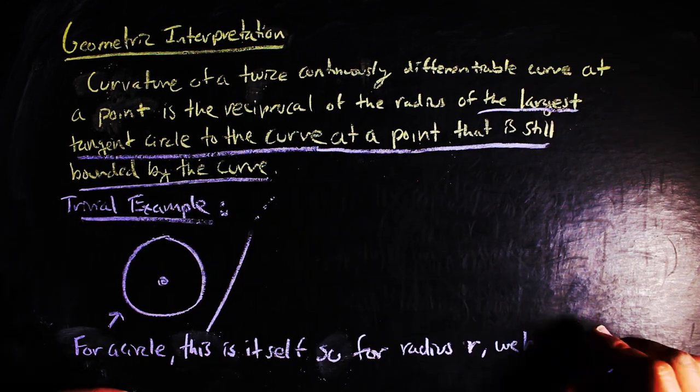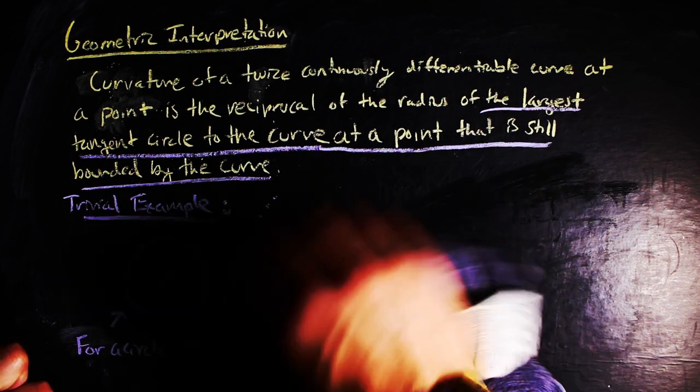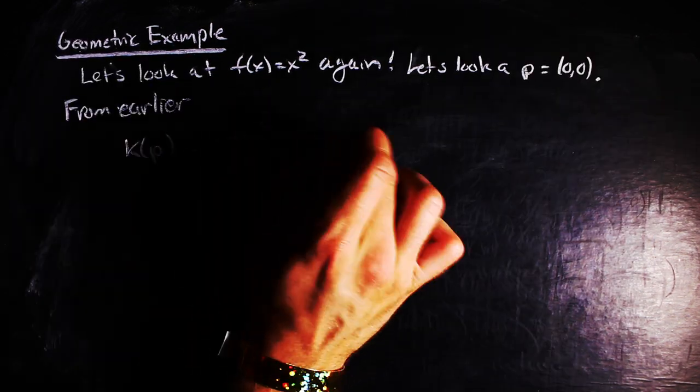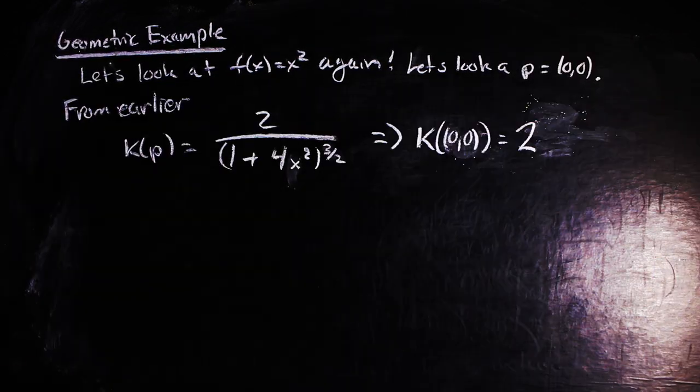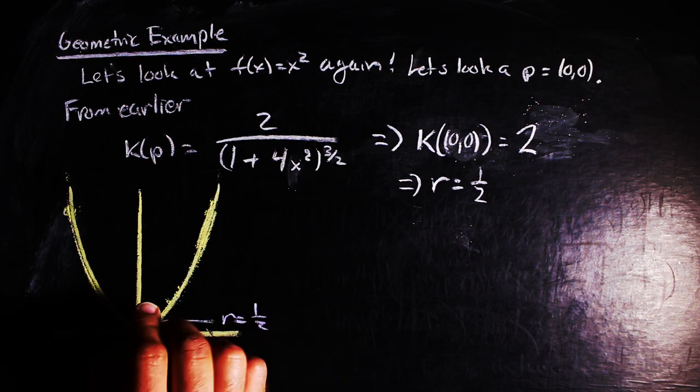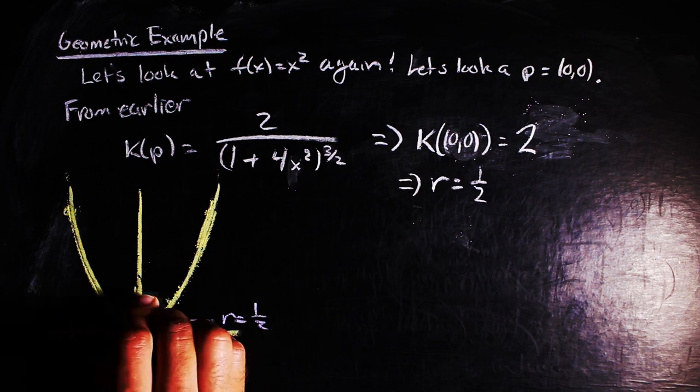For our parabola example, if we look at the point on the graph at zero, zero, and use our curvature formula, we get a curvature of two, which means the largest circle that is tangent to our graph at zero, zero, and is still bounded by it is the one with radius one half and centered at zero, one half, which kind of looks like this.